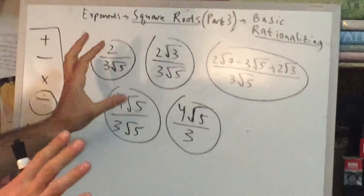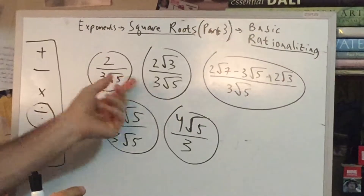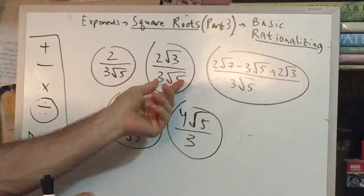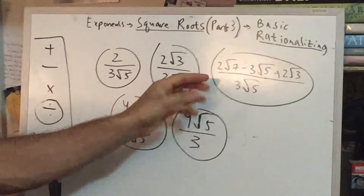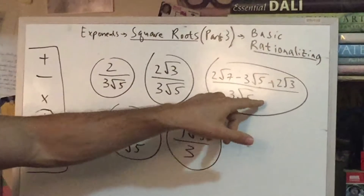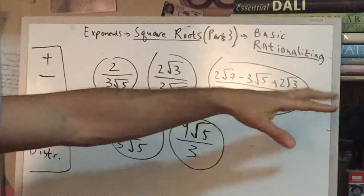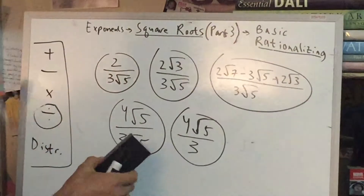Well, it still doesn't look simple, but there's not a lot of stuff going on — there's just one term, like three times the square root of five. There are no other operations like plus another thing or minus another thing. That'll be in the next video.